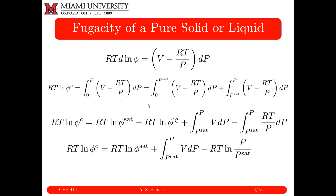The first term — the integral from zero to PSAT — is equivalent to log φSAT minus log φ(ideal gas). Since φ of an ideal gas equals one, log of one is zero, so this term vanishes. I then break the remaining integral from PSAT to P into two parts: the integral of V dP minus the integral of RT/P dP. Since this is a constant temperature process, R and T are constant, and the second part integrates to −RT log(P/PSAT). This gives RT log φC = RT log φSAT + ∫PSAT to P V dP − RT log(P/PSAT).